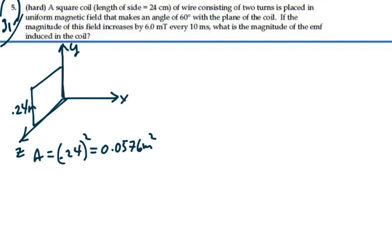And we're told that the magnitude of the field is 6 millitesla. And our change in time is going to be 10 milliseconds. And we have an angle of 60 degrees with the plane of the coil.